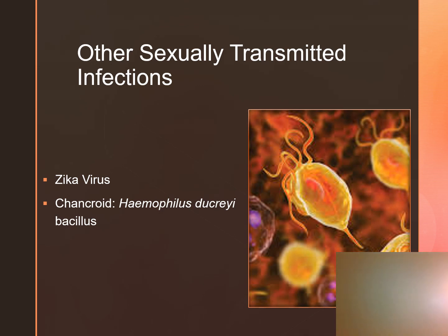Other sexually transmitted infections include the Zika virus. It is usually transmitted by mosquitoes but can also be transmitted through sexual intimacy. This virus can cause microcephaly in newborns of infected mothers, where the newborn's head is much too small. The other infection is chancroid, which is characterized by a macule or vesicle pustule formation and results in a painful genital ulcer. There may also be enlarged or tender inguinal lymph nodes, and we treat this with antimicrobials.